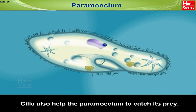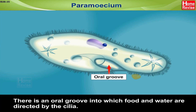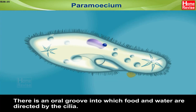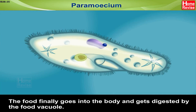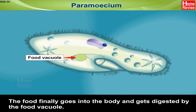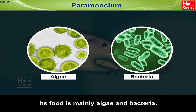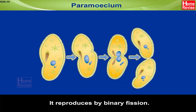Cilia also help the paramecium to catch its prey. There is an oval groove into which food and water are directed by the cilia. The food finally goes into the body and gets digested by the food vacuole. Its food is mainly algae and bacteria. It reproduces by binary fission.